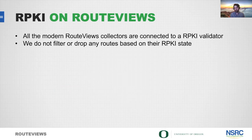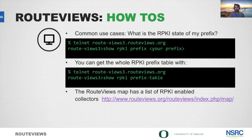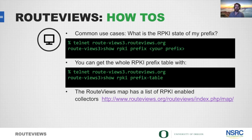The RPKI state is there for you as an operator to view from a neutral third party. On our modern collectors you can look at the RPKI state for a given prefix by running 'show rpki prefix [prefix]'. You can also dump the entire RPKI table in the CLI by running 'show rpki prefix-table'. You can identify which collectors are RPKI-enabled by going to our map and filtering based on RPKI.